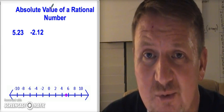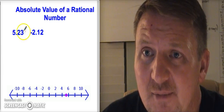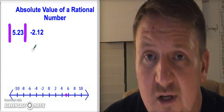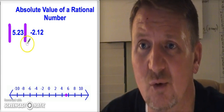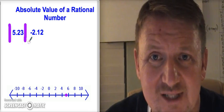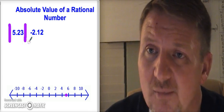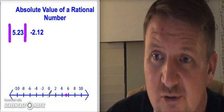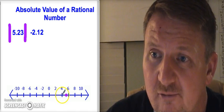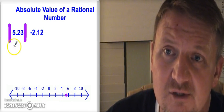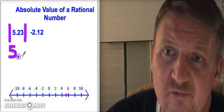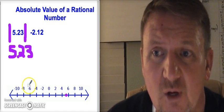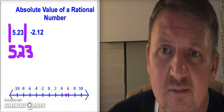The answer to an absolute value problem is always positive — I can't stress that enough. Absolute value is designated with vertical bars on each side of the number — they're not the number one, they're vertical bars found on the right side of the keyboard. The absolute value of 5.23 is found by counting how far it is from zero on the number line: two, four, five point two three — so the absolute value of 5.23 is 5.23.